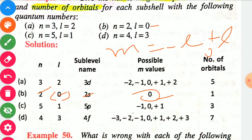Third case: n equal to 5, l equal to 1. This means fifth shell, p sub-shell — designation 5p. For l equal to 1, m values are minus 1, 0, and plus 1, giving a total of 3 orbitals.